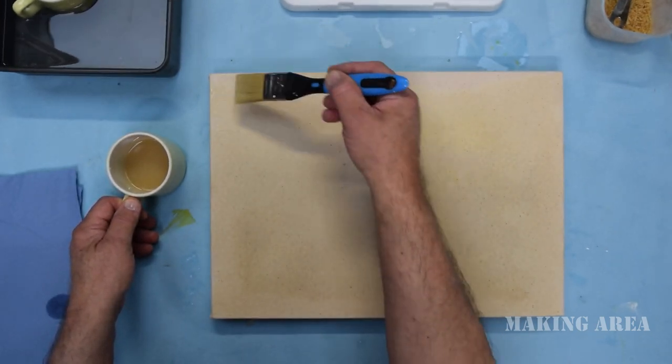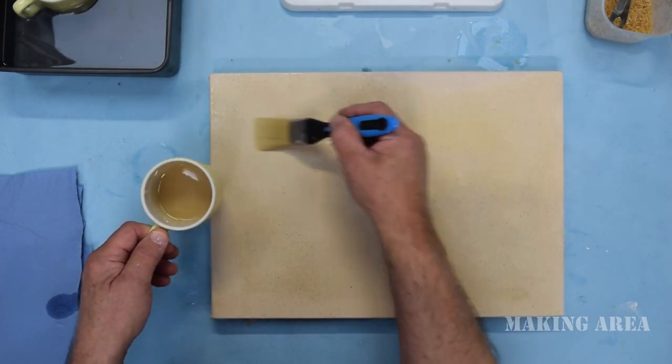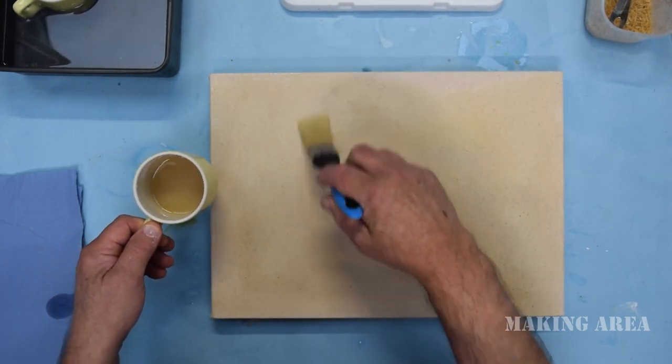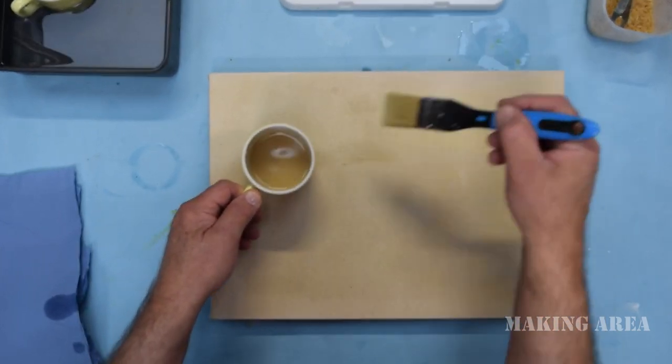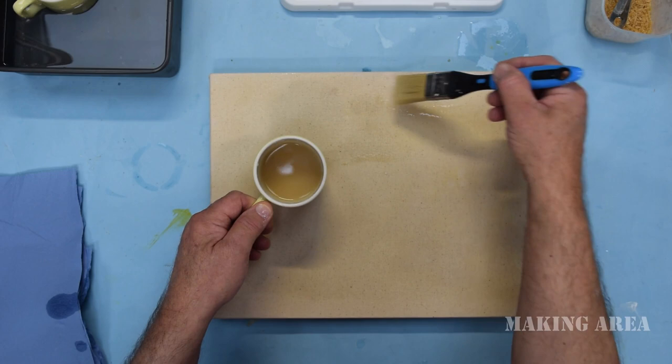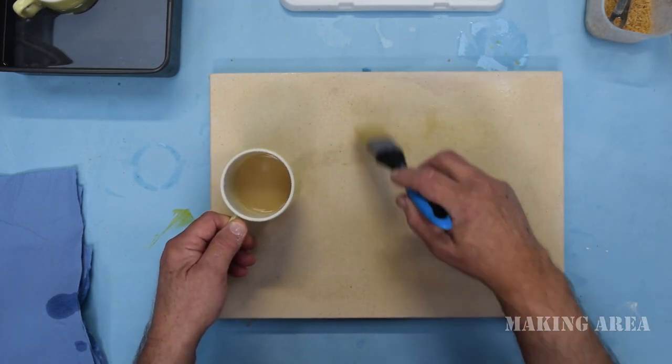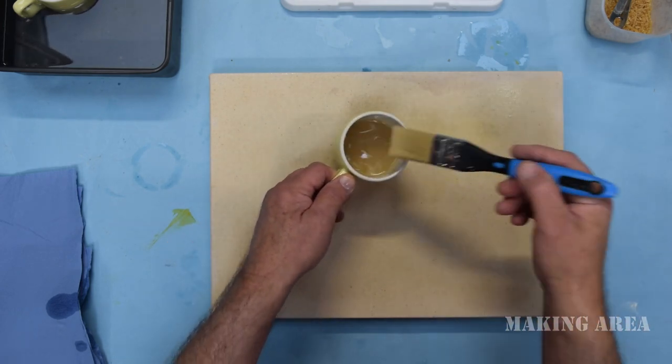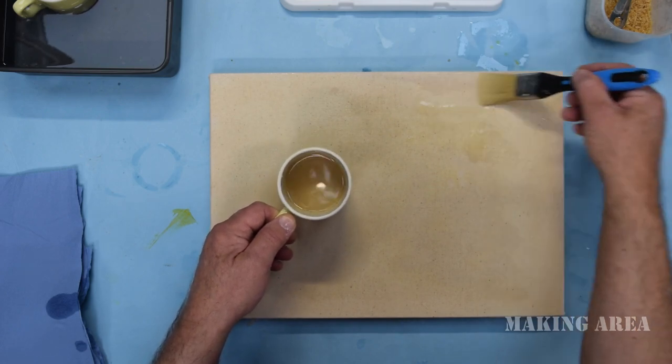So I'm just going to quickly brush the rabbit skin glue size across the surface. Now even though it's got one coat on it already it's really soaking in.